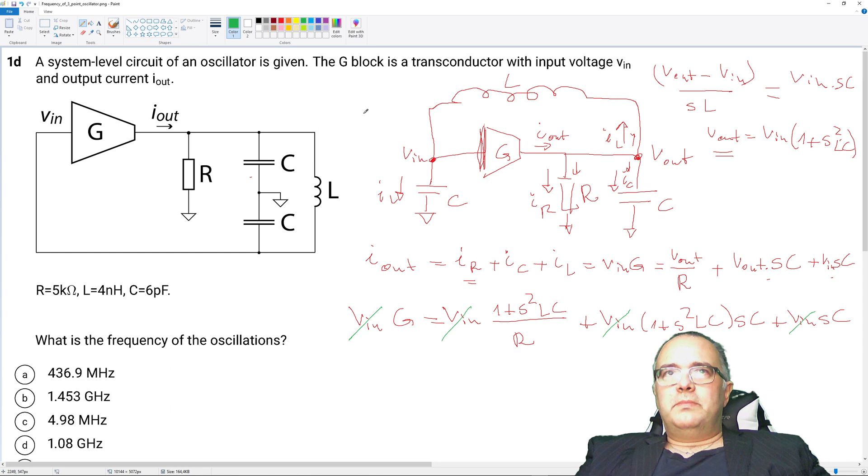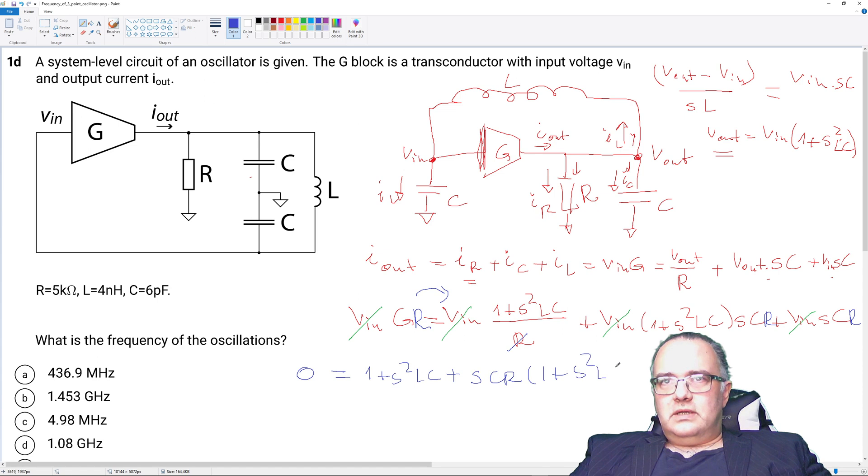And now I will also multiply everything by R to get rid of this. So this will be times R. Here nothing. Times R. And here times R. Now I'll get this to the other side. So this will be something equal to 0. Let's see. So 1 plus S square LC plus sCR 1 plus S square LC plus sCR minus GR.